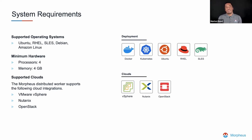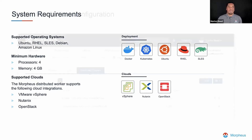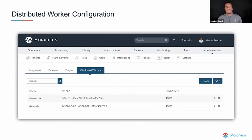The distributed worker supports a number of clouds at the moment, such as VMware vSphere, Nutanix, and OpenStack, to facilitate deployment and interaction with those environments. Let's take a quick look at the distributed worker configuration. Within the Morpheus platform, under Administration > Integrations > Distributed Workers, there's the ability to add a new distributed worker.